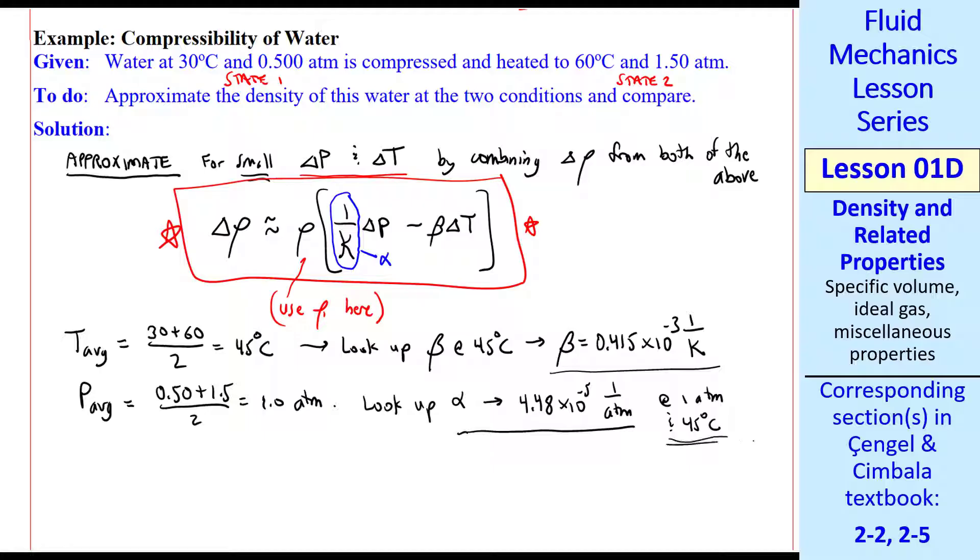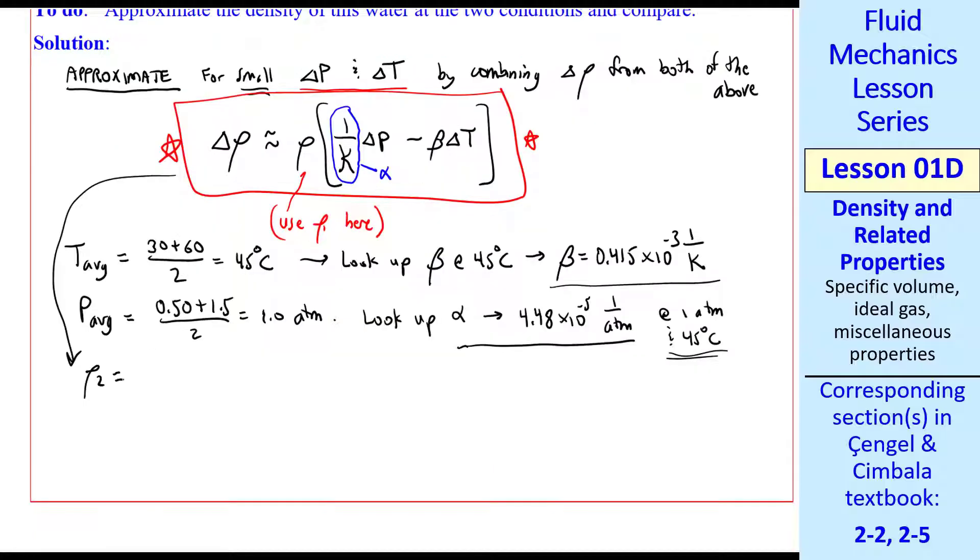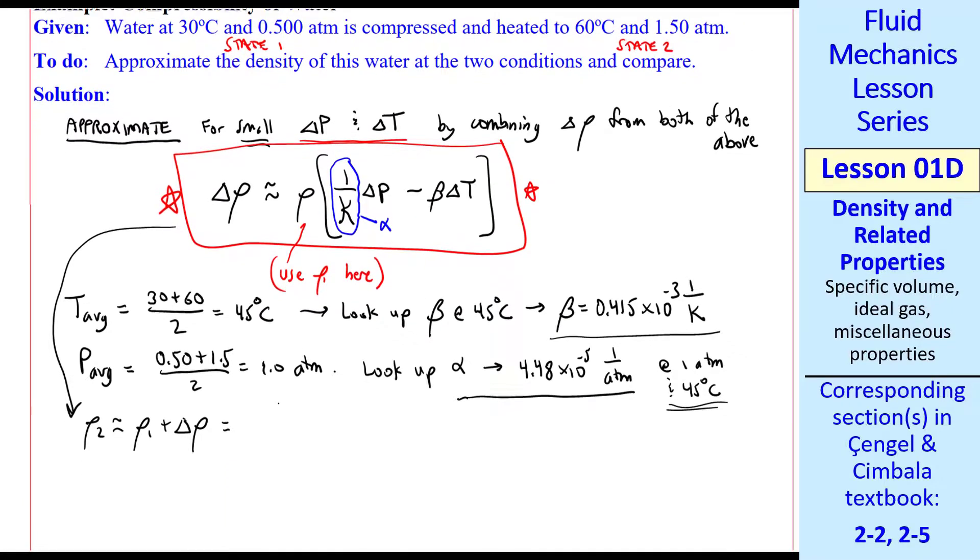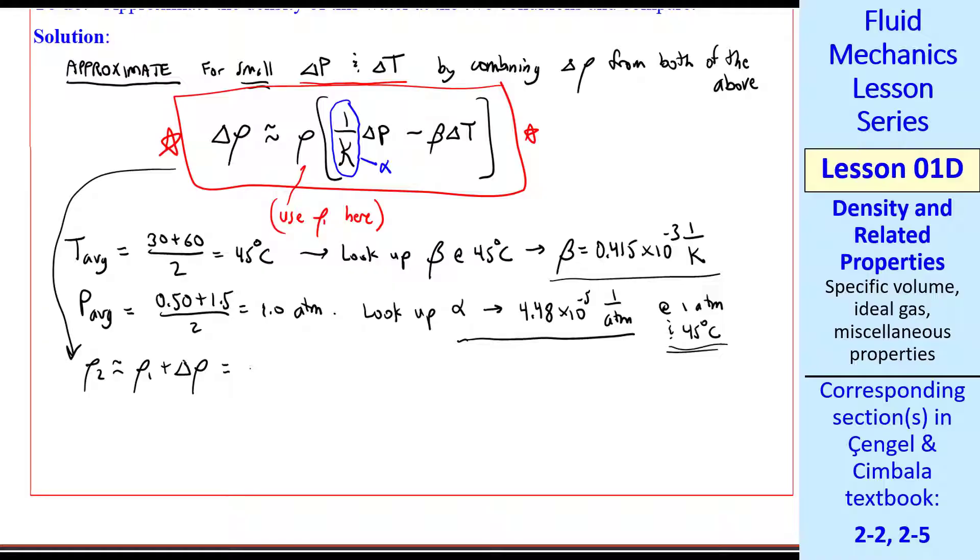We can approximate rho 2 as rho 1 plus delta rho using delta rho from our equation above. You can look up the density of water at 30 degrees C. It's not a strong function of pressure, so we use the table for 1 atmosphere. So it's 996.0 kg per meter cubed.